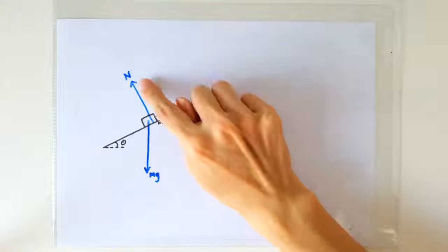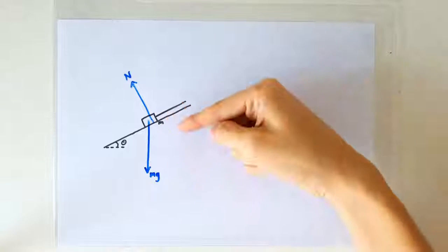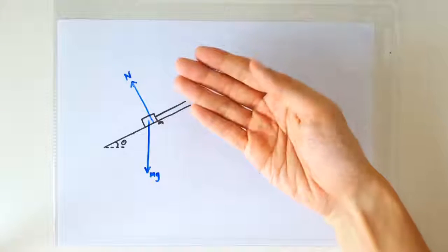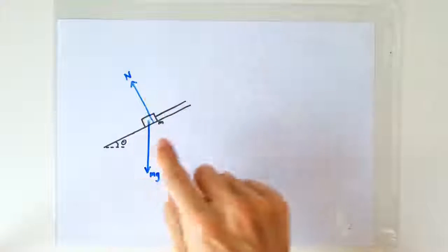There is of course the normal contact force, that's the slope surface that exerts on the block. And the normal contact force by definition must act perpendicularly to the two surfaces.